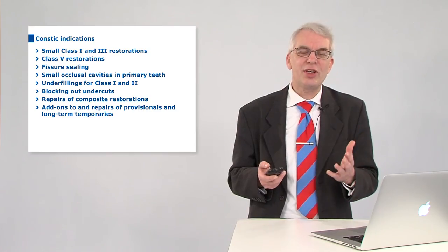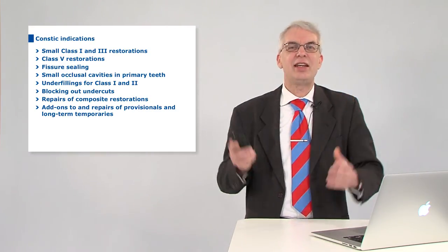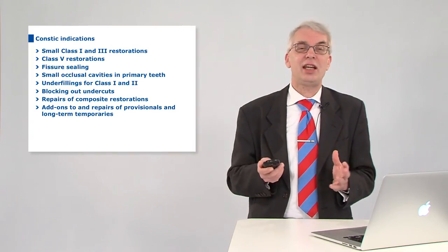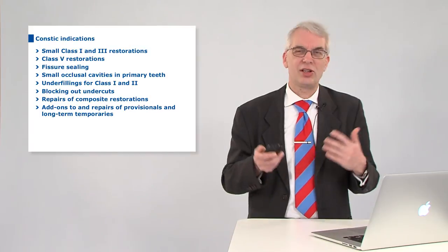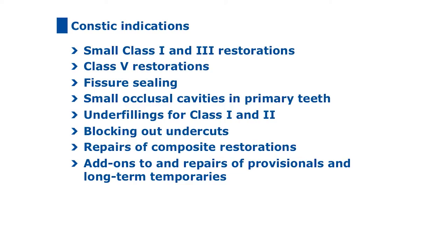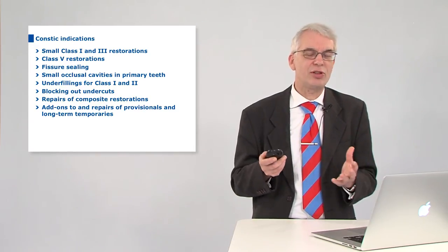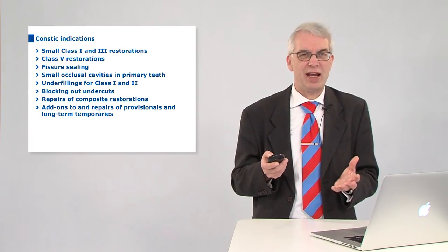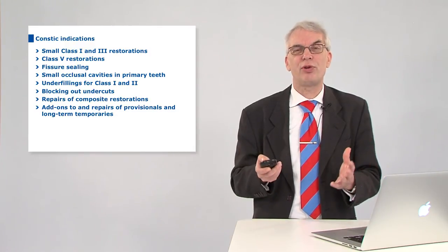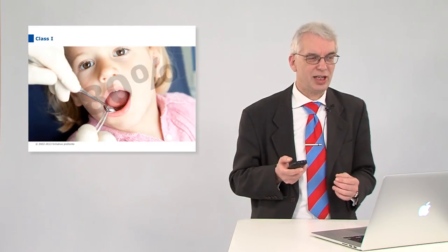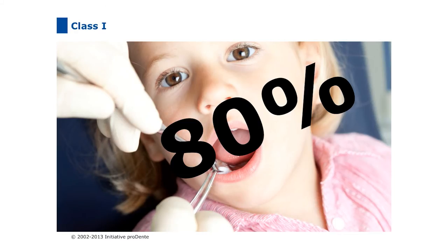So when we're talking about practical use, it's very important to visualize the indication scope. So CONSTIC is indicated for small class 1 and 2 restorations, class 5 restorations, fissure sealing—which is very important—small occlusal cavities in primary teeth. We're going to look into this. Then the usual basically for any flowable composites: underfillings for class 1 and 2, blocking out of undercuts, repairs of composite restorations, add-ons for long and short term temporaries and repairs. So that is a very nice portfolio that you can fill with CONSTIC.